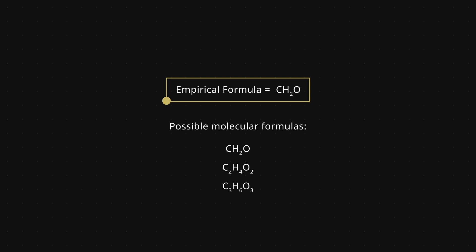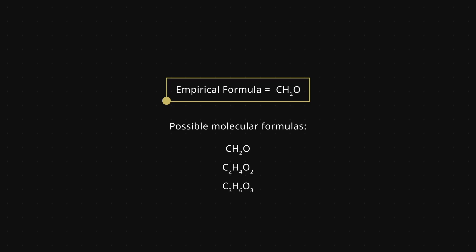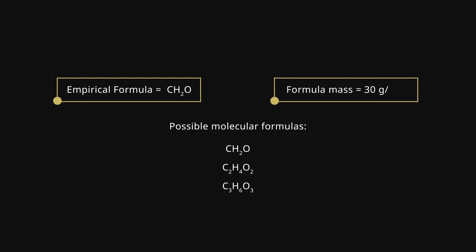How can we tell which multiple we have? This is where mass spectroscopy comes in, because it can tell us the molar mass of the molecule. The empirical formula CH2O has a formula mass of 30 grams per mole. If the molecular formula is a multiple of the empirical formula, the molar mass will be a multiple of the formula mass.